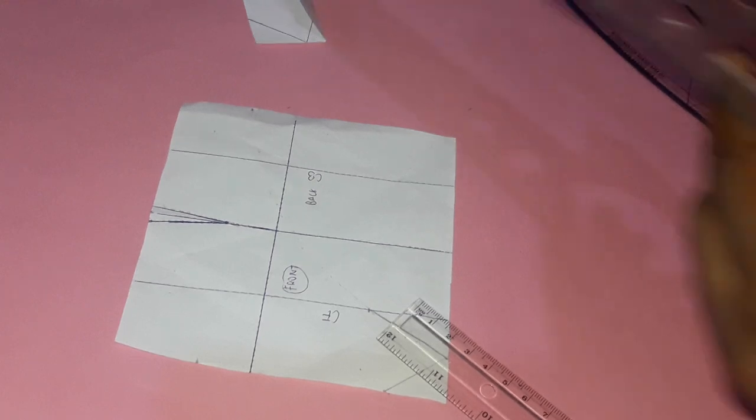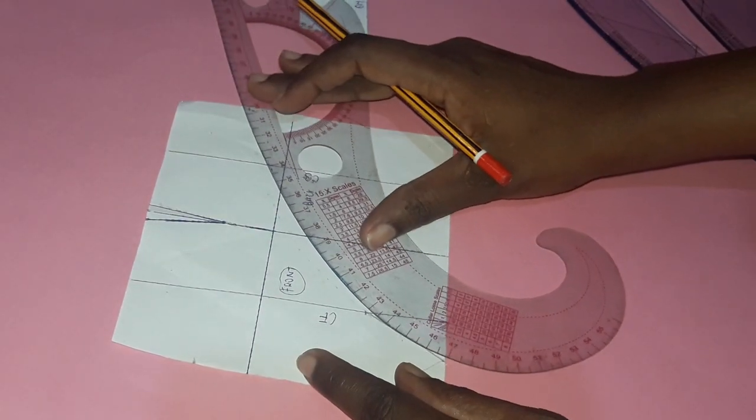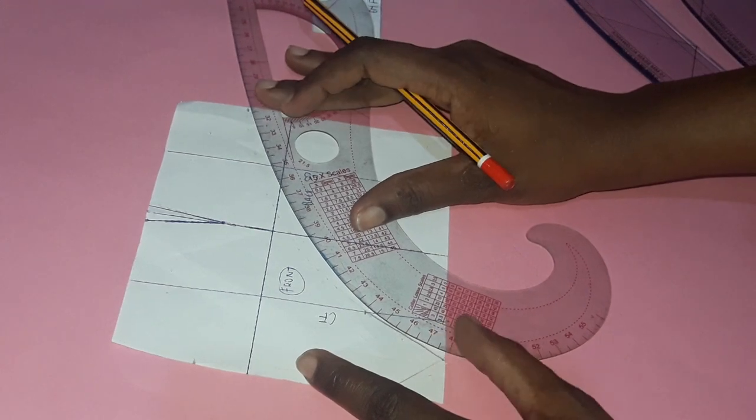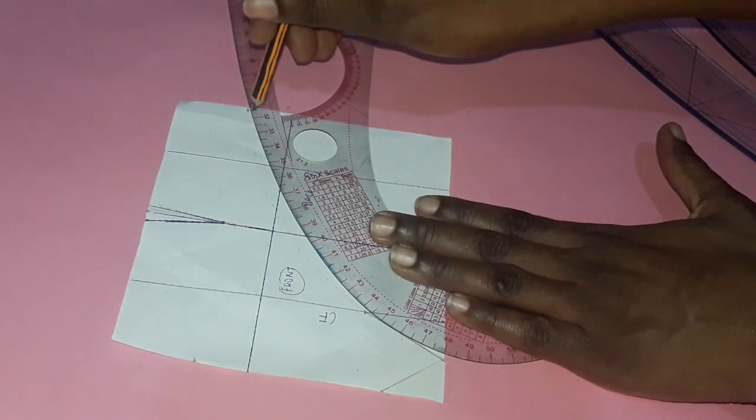So let me get my curve ruler, and I'm just going to use it to make sure it's a perfect curved line. So I've done this, right?